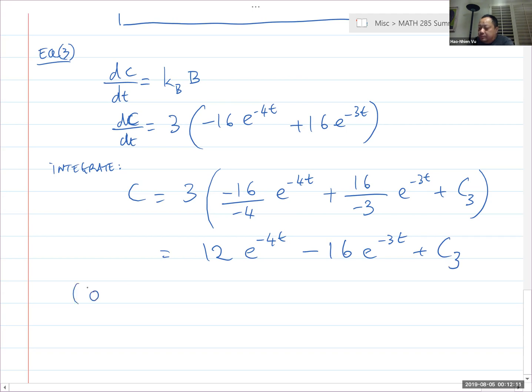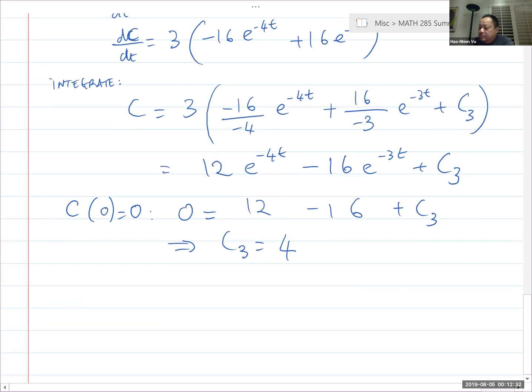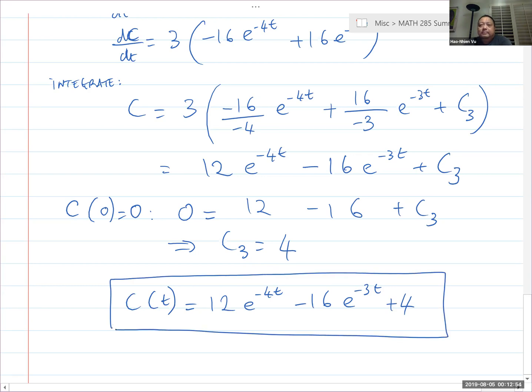C(0) equals 0. At the beginning I have nothing but A, so 0 is equal to 12 minus 16 plus C_3, so C_3 is equal to, looks like 4. So C(t) is equal to 12e^(-4t) minus 16e^(-3t) plus 4. There we go.